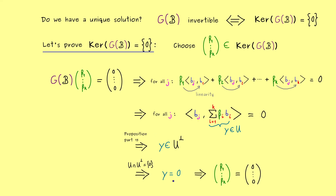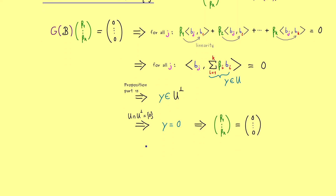And there we have it. The unique solution of the system of linear equations from above gives us the orthogonal projection. This works for every k-dimensional subspace in a vector space with an inner product — so it's very general — but we can definitely look at a very quick example.